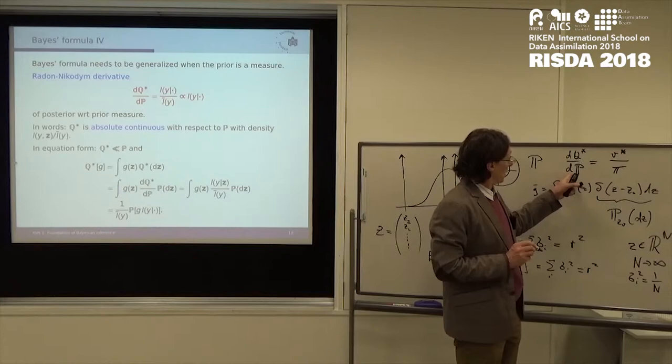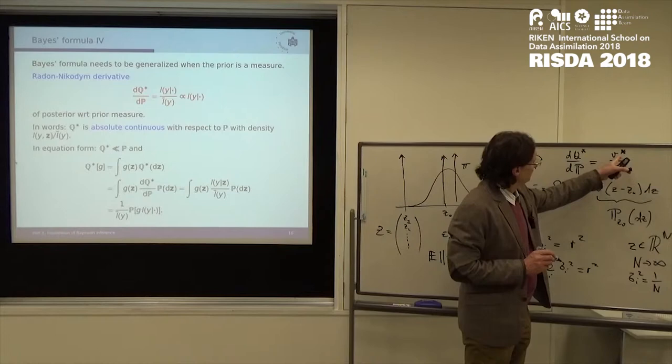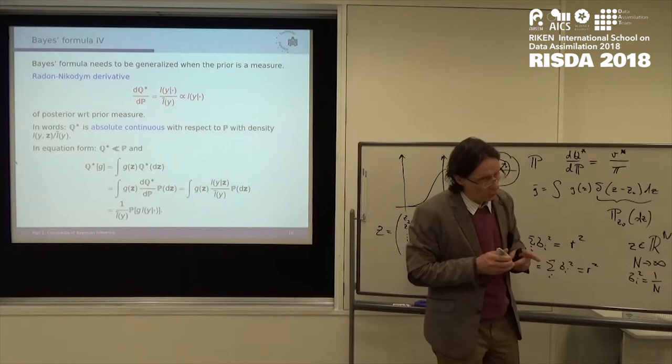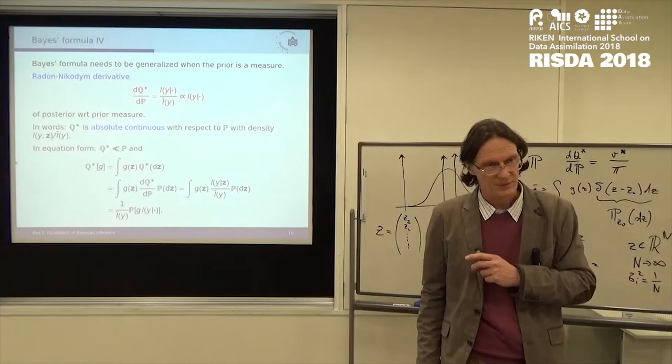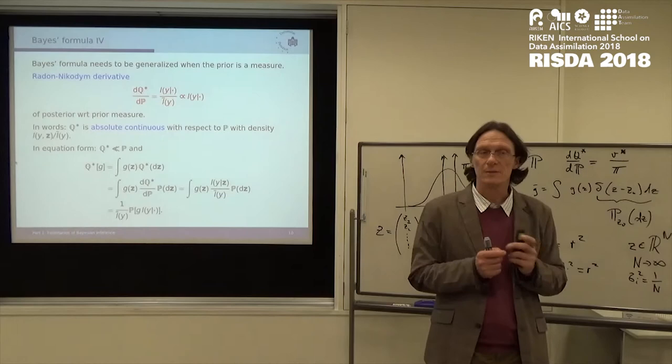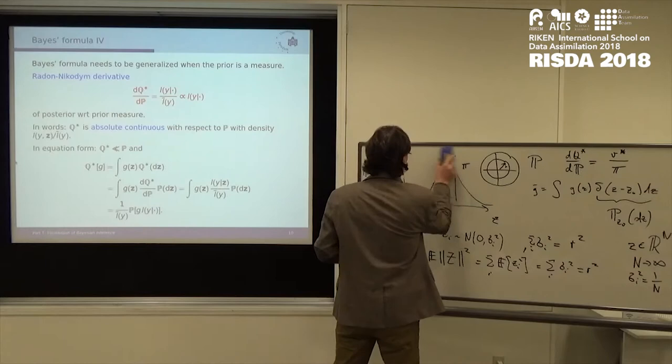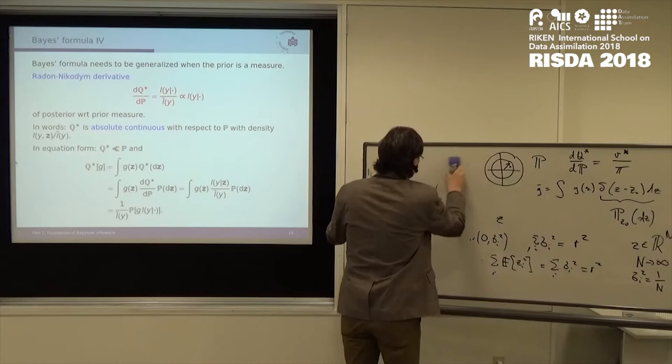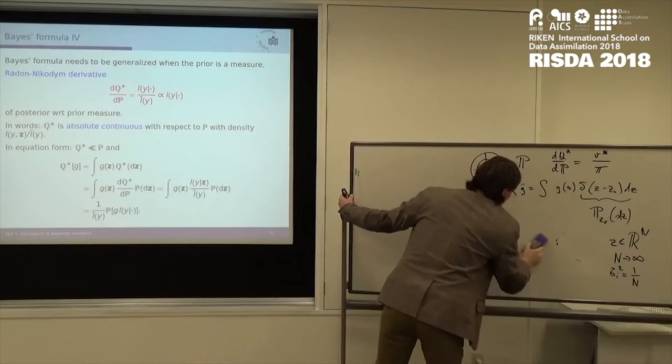So it is equivalent to, if the densities exist, it's Q star divided by P. So this was the density of the prior. And this is, if the density exists, that's the density of the posterior. But as we said, not always, the densities don't always need to exist. And then we need to talk about this more general concept of this Radon-Nicodym derivative. But as I said, it's just a proxy for changing measures.